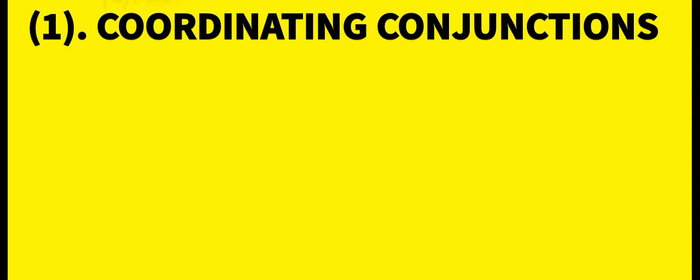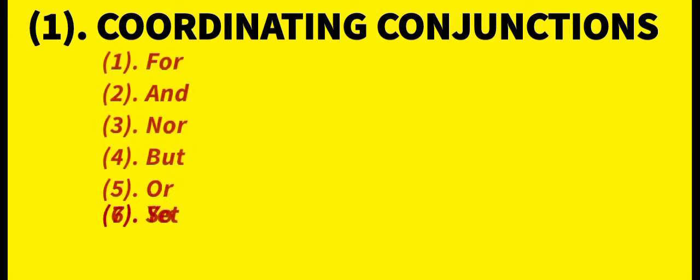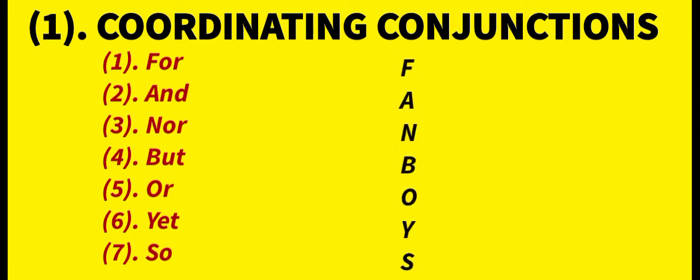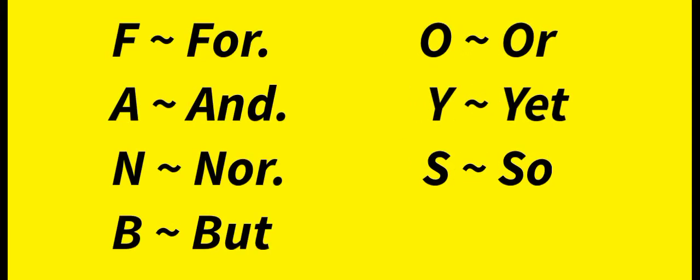The coordinating conjunctions are: For, And, Nor, But, Or, Yet, So. Let me repeat: For, And, Nor, But, Or, Yet, So. If you want to learn a simple trick to remember coordinating conjunctions, we have a simple acronym — FANBOYS. F stands for For, A stands for And, N stands for Nor, B stands for But, O stands for Or, Y stands for Yet, and S stands for So.